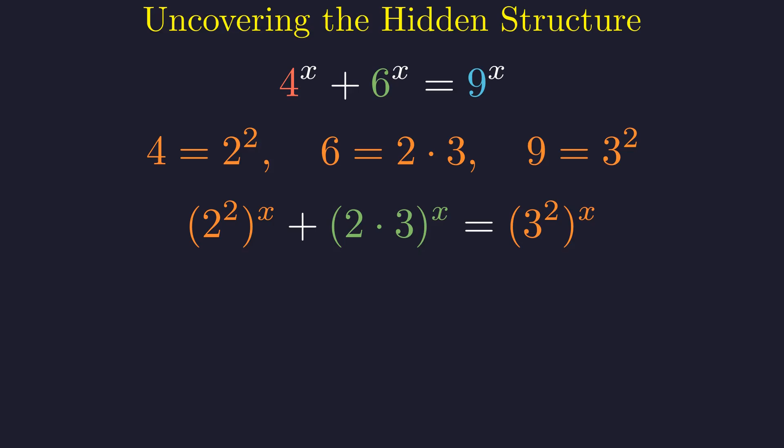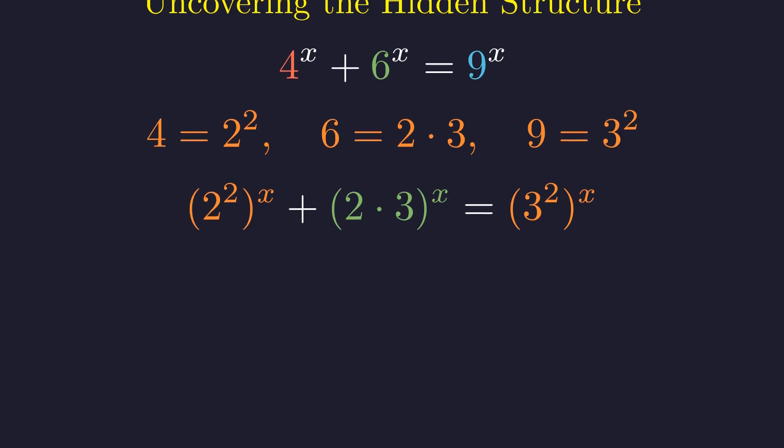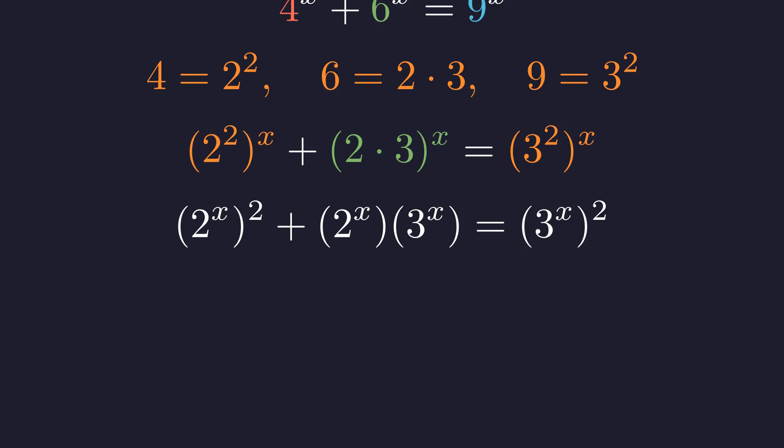We can simplify this by applying two exponent rules. The power of a power rule to the first and last terms, and the power of a product rule to the middle term. Applying standard exponent rules transforms our equation into this clearer form, terms involving powers of 2 and 3.